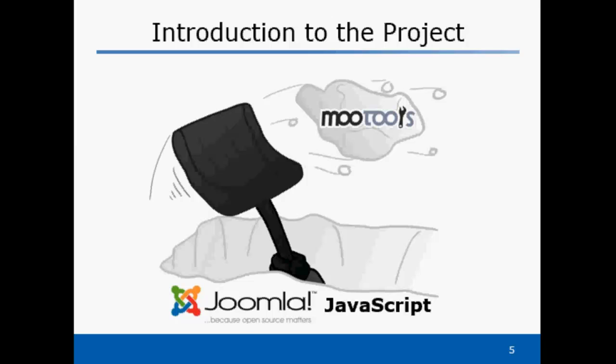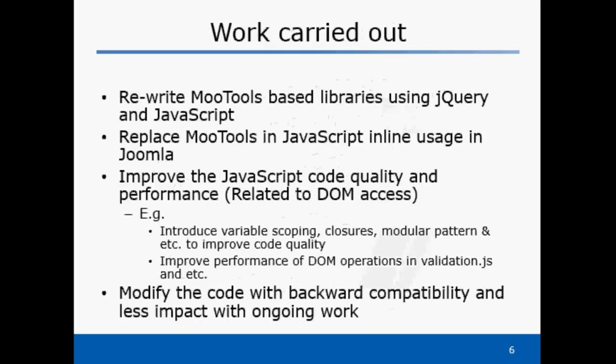If you are an end-user of Joomla, you might not find any new features out of this project, since it's more or less transparent to the end-user. Under this project, the MooTools-dependent JavaScript code was initially identified and classified based on its dependencies. Then MooTools-dependent libraries and inline JavaScript code were rewritten using jQuery and native JavaScript to keep the functionality intact.